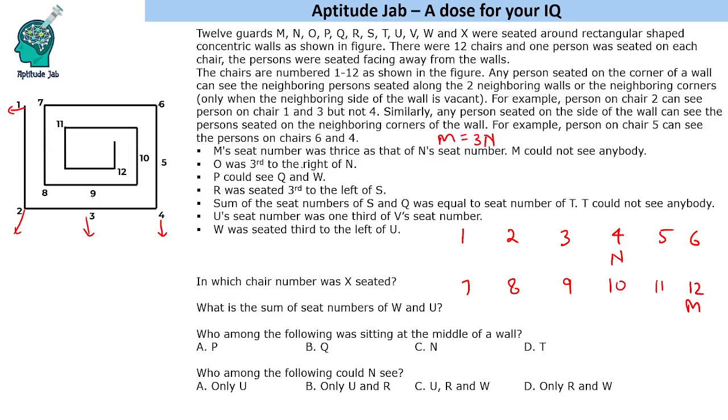O was third to the right of N. Now consider, since they are facing outside, the right side for any person is basically in the clockwise direction, and left side will be in the anticlockwise direction. If they are facing outside, O was third to the right of N. So 1, 2, 3. O is at seat number 1.